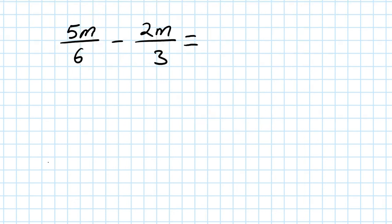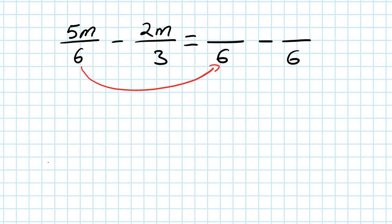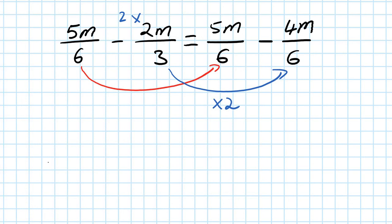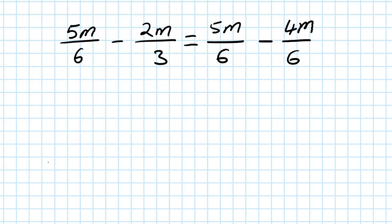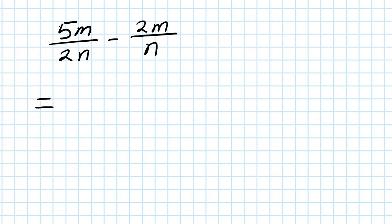Subtraction works exactly the same. For 5m over 6 minus 2m over 3, the common denominator is 6 since 6 is also a multiple of 3. From 6 to 6 I do nothing, so I just copy 5m. From 3 to 6 is times 2, so 2m times 2 is 4m. Then 5m minus 4m is m, so the answer is m over 6.